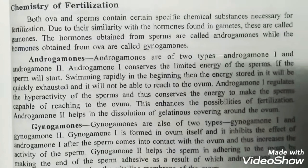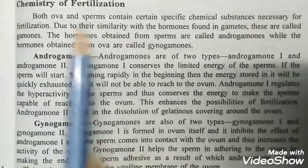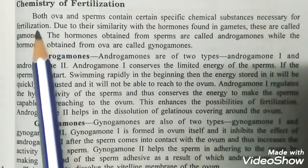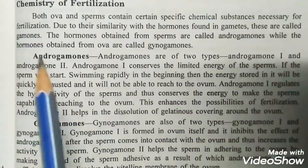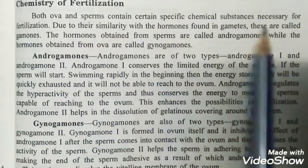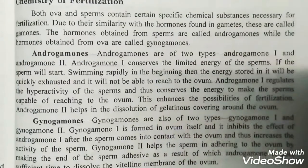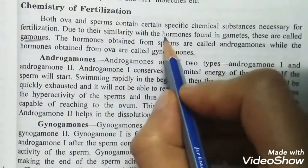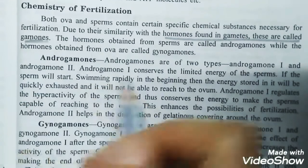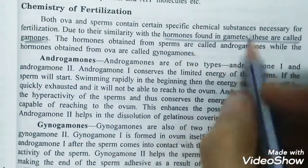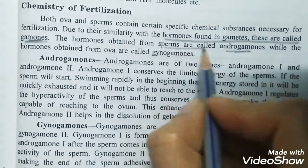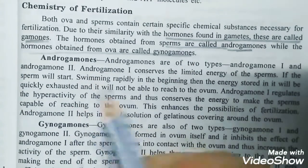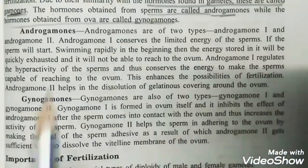Now the last topic is chemistry of fertilization. Both the ovum and sperm contain certain specific chemical substances necessary for fertilization. Due to their similarity with hormones found in gametes, these are called gamones. The hormones present in these gametes are known as gamones. The hormones obtained from sperms are called androgamones, and the hormones obtained from ova are called gynogamones.